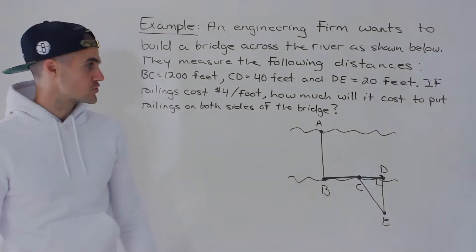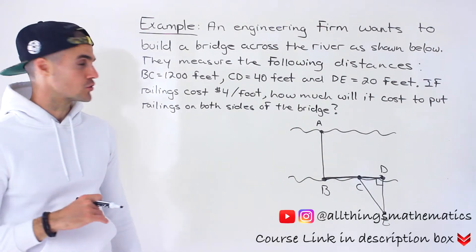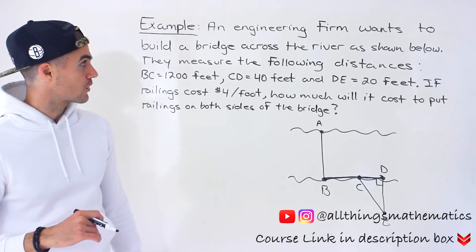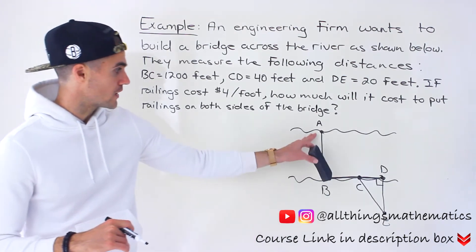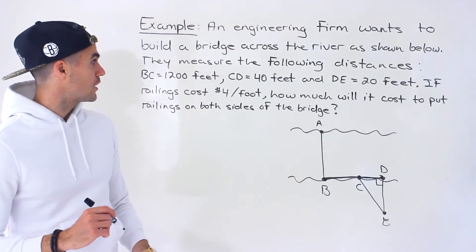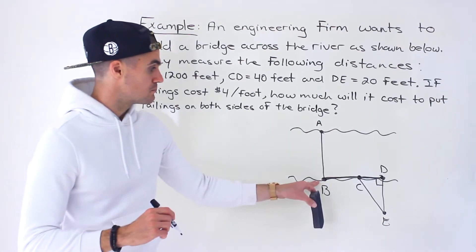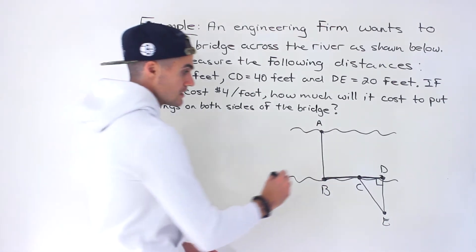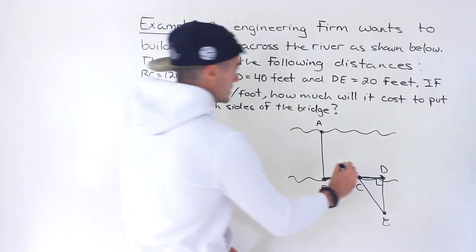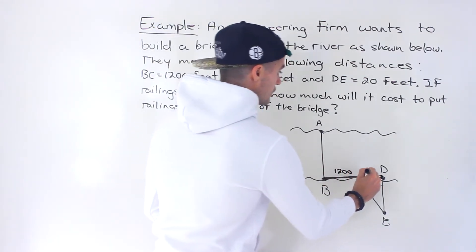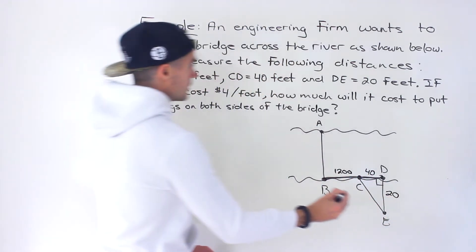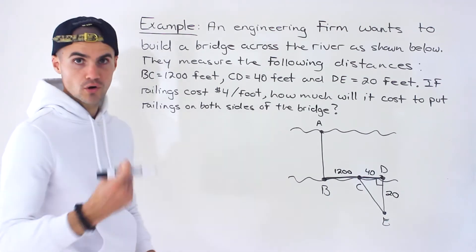Welcome back everyone, Patrick here moving on to the next question dealing with similar triangles. We're told an engineering firm wants to build a bridge across the river as shown, from point A to point B. They measure the following distances: the distance from B to C is 1200 feet, from C to D is 40 feet, and from D to E is 20 feet.